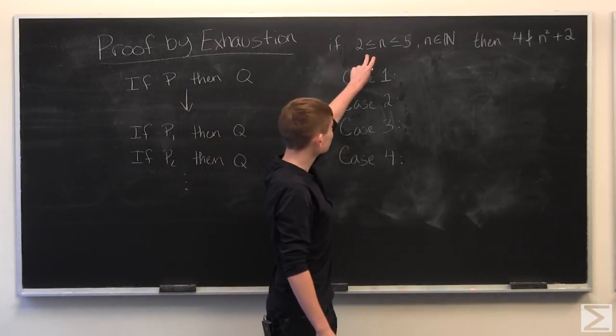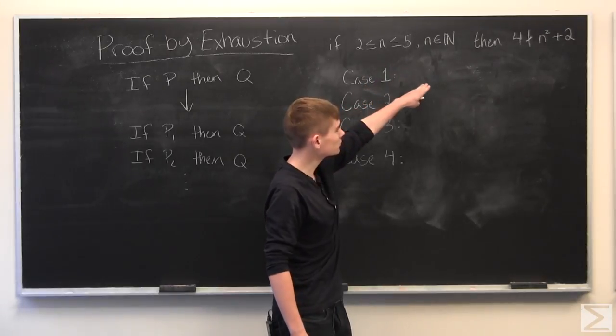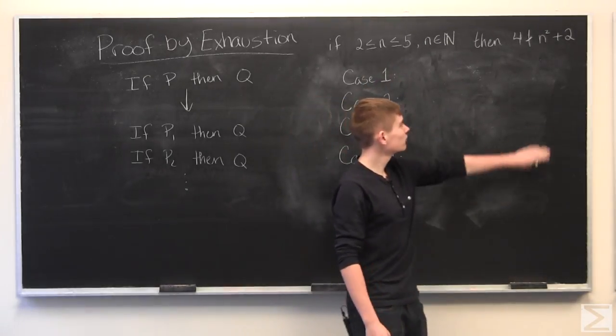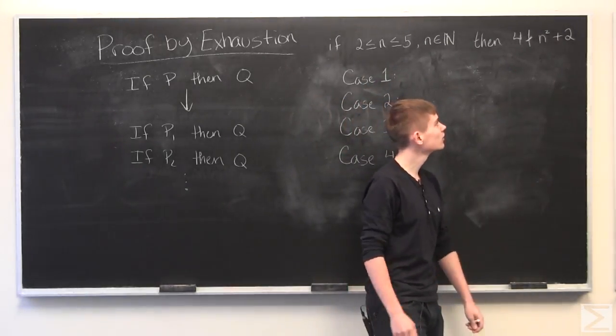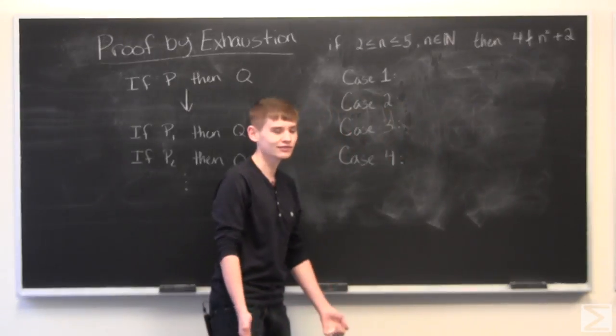Let's say we want to prove that if N is a natural number between 2 and 5 inclusive, then 4 does not divide N squared plus 2, where this symbol just means does not divide evenly.